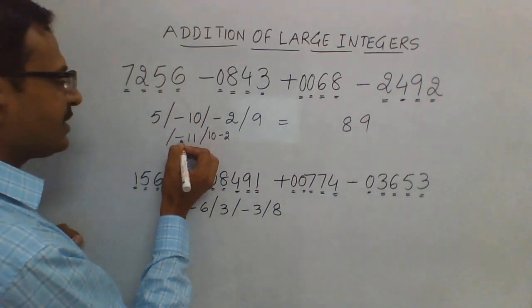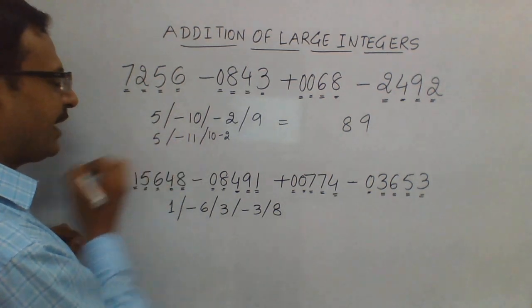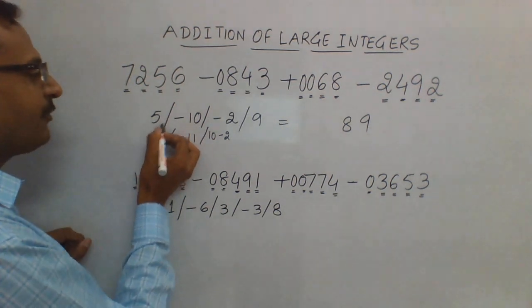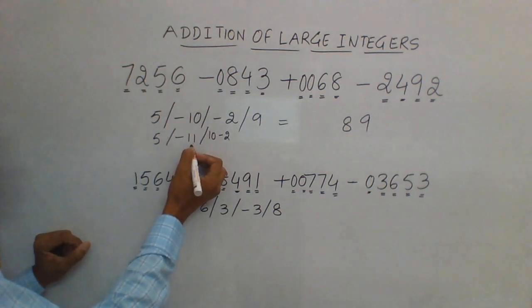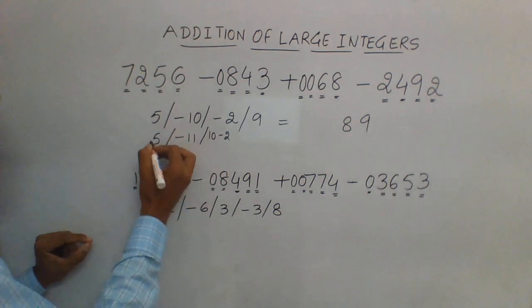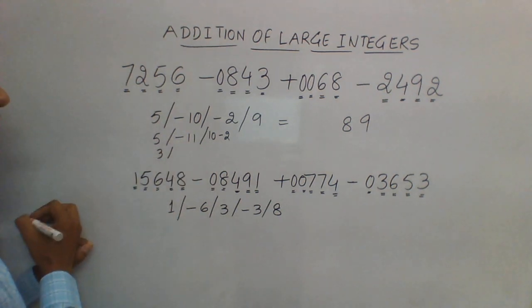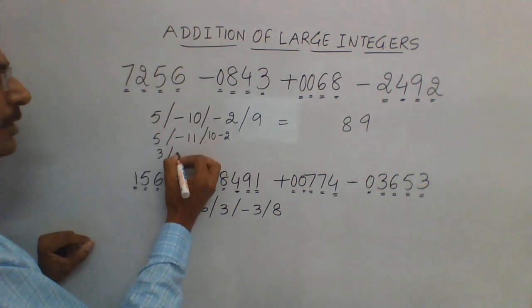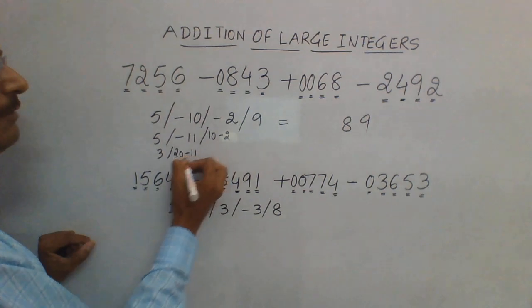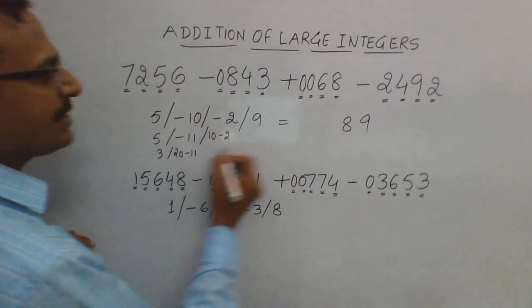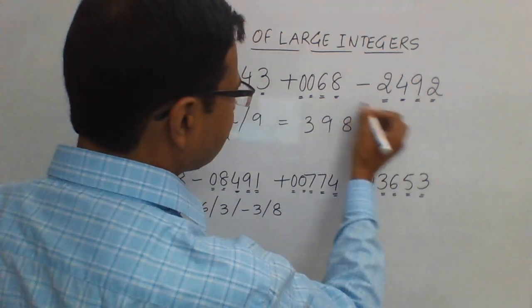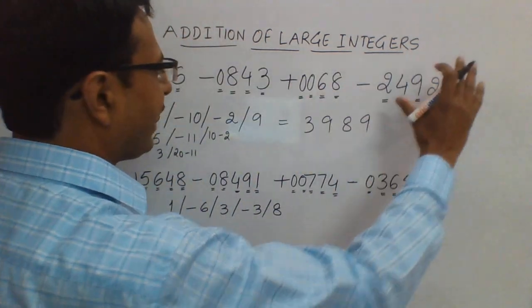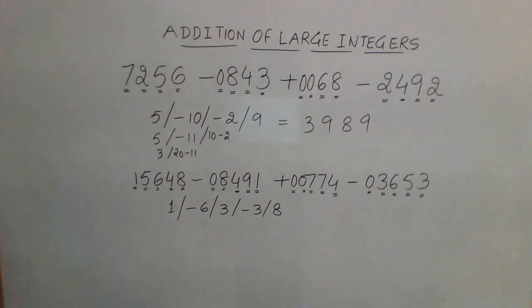Now what to do with this? We have a 5 here. If you carry 1 from here, this is going to be 10 minus 11, which is again negative. So what you do in this case is carry 2 from here. This will become 3, and if you carry 2, this will be 20 minus 11, which is 9, and we have a 3 remaining here. So 3989 is the result.